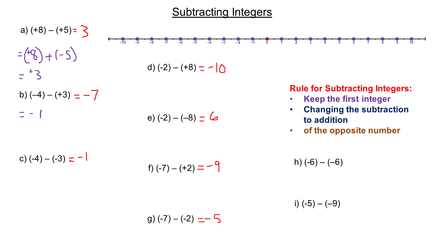For example B: keep negative 4 and change the subtraction to adding negative 3. Adding two integers with the same sign, you add 4 and 3 to get 7 and keep the common negative sign — so negative 7. For example C: keep negative 4 and change subtract negative 3 to adding positive 3. Now adding integers with different signs, subtract 4 and 3 to get 1, and keep the sign of the bigger integer — negative — so the answer is negative 1.